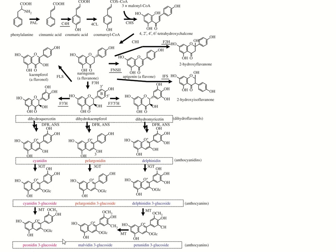Peonidin is formed from cyanidine-3-glucoside. Malvidin is formed from delphinidin. Delphinidin gives petunidin and then malvidin. Therefore, in certain cases, you will first find blue color, then yellow or pink color. In certain pea plants, they have different flower colors due to these pathways.